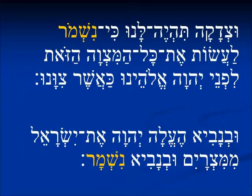In this first example from Deuteronomy 6:25, we are looking at the root Shamar, which means to guard or to keep. Nishmor means 'because we are keeping, we are guarding to do all these commandments.' So this is the imperfect — we will keep and guard the commandments.